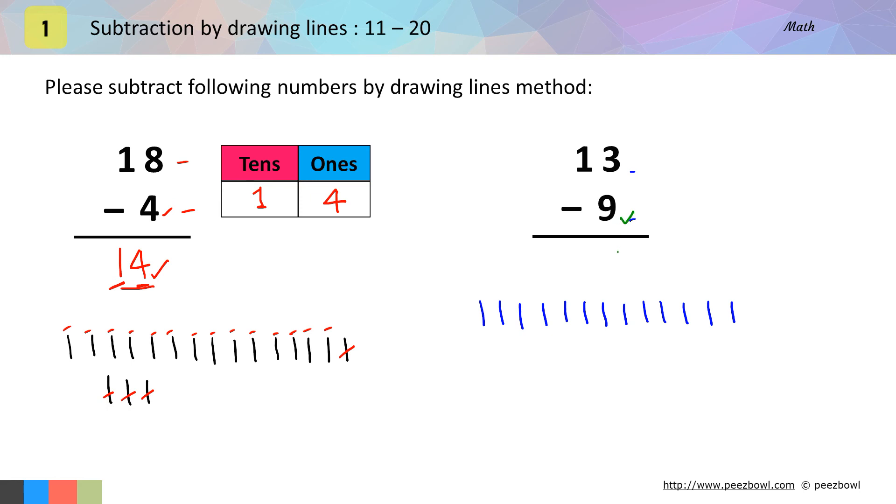And as we need to subtract 9 from 13, I will cut 9 lines. Here we have 1, 2, 3, 4, 5, 6, 7, 8 and 9 lines. So the result of 13 minus 9 is equal to 4.